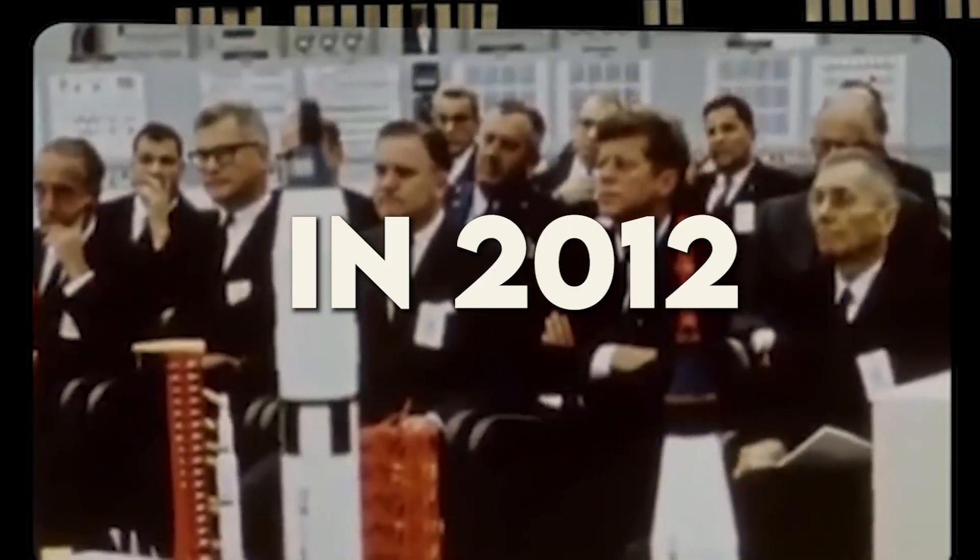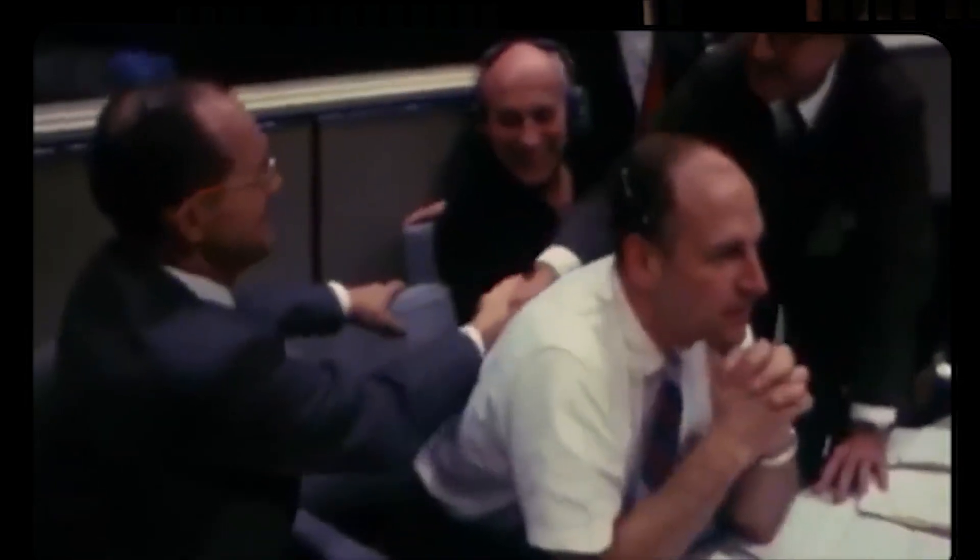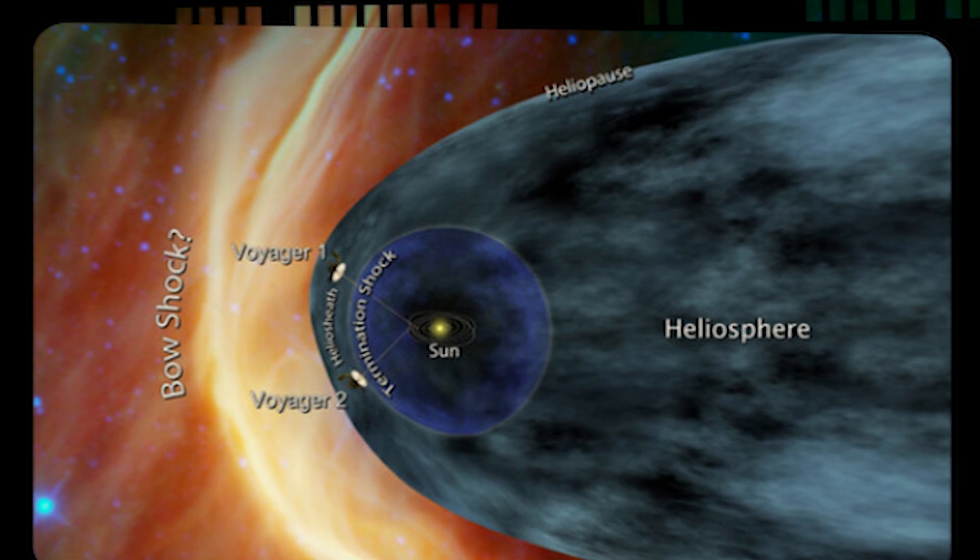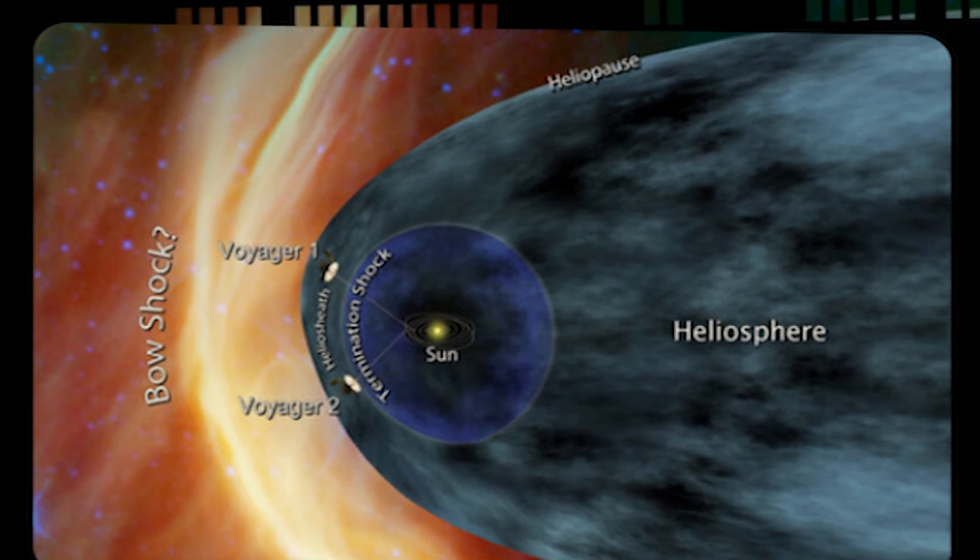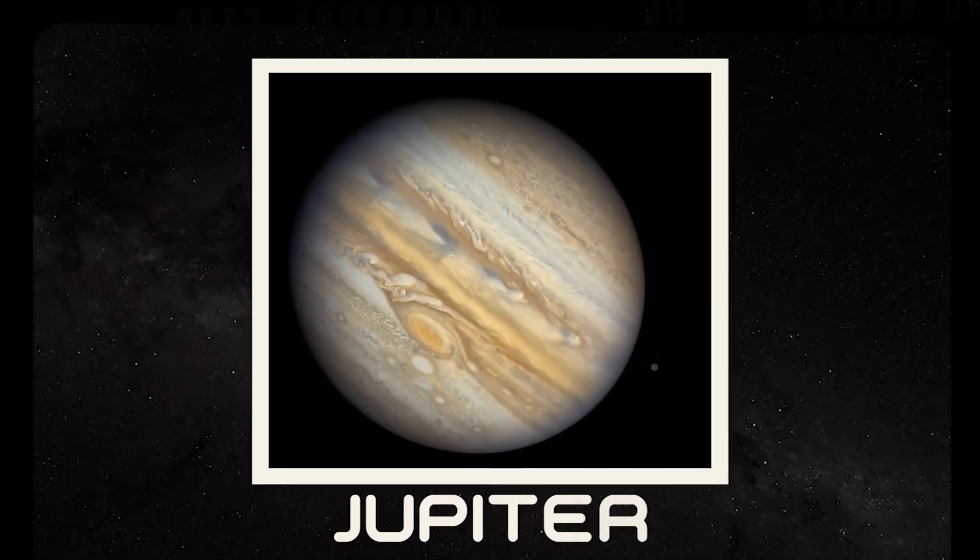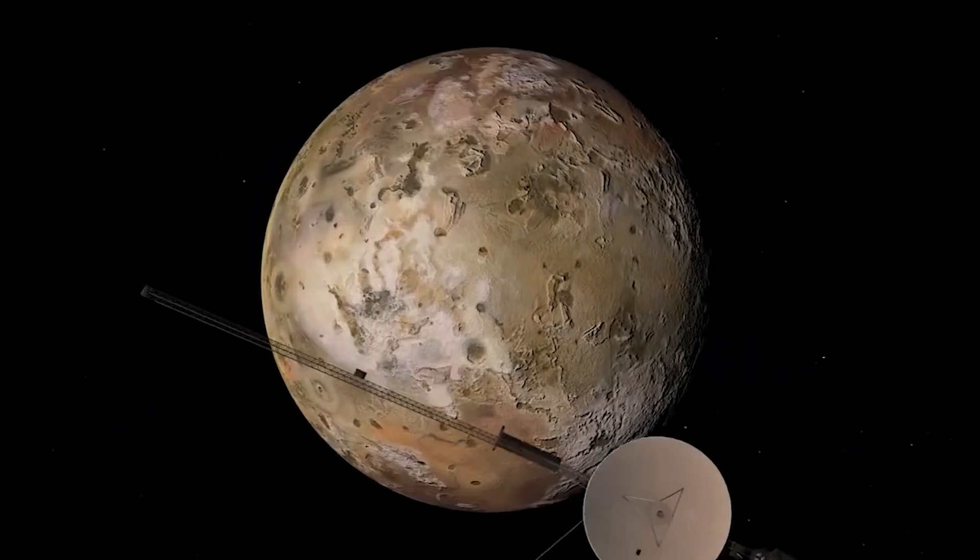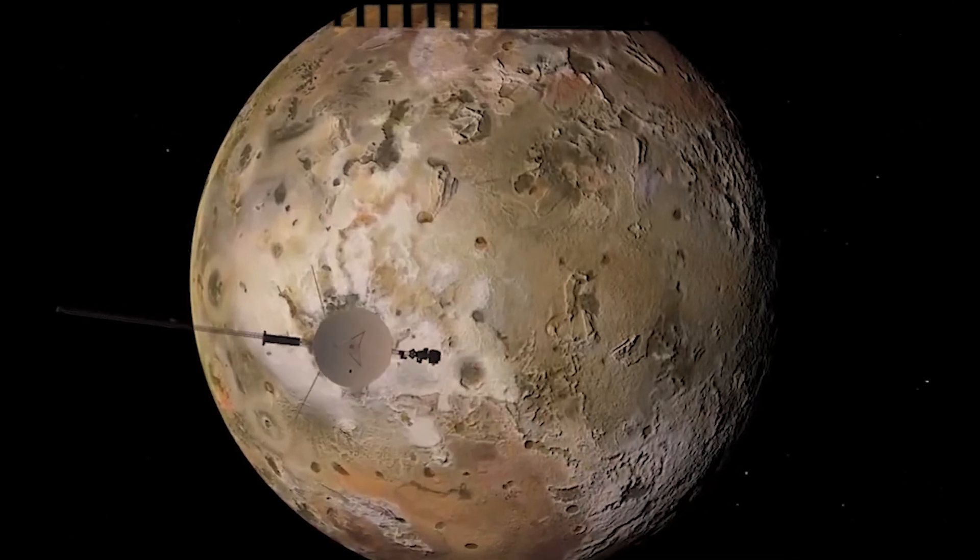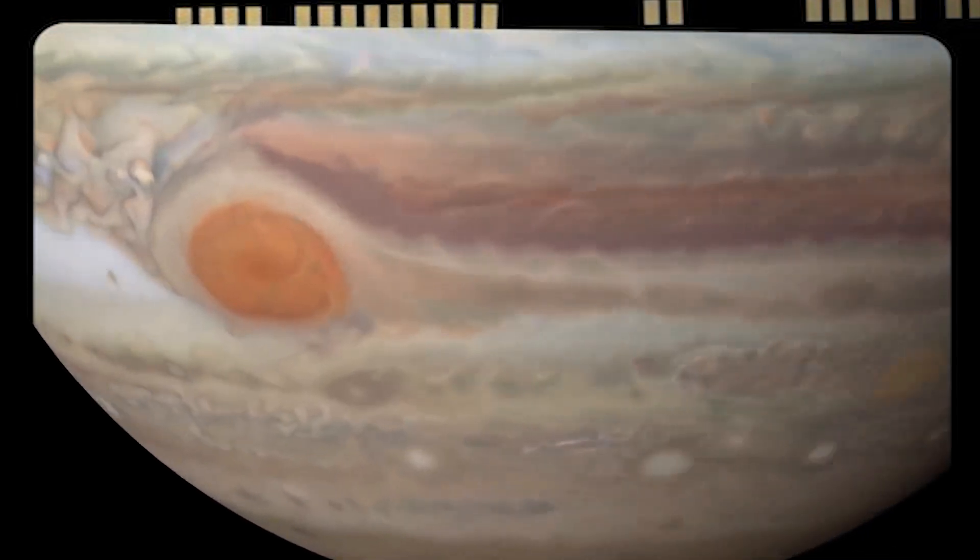In 2012, Voyager 1 achieved a historic milestone by becoming the first human-made object to breach the heliosphere, the protective bubble created by the Sun's magnetic field and solar wind. It ventured into interstellar space, carrying with it the iconic Golden Record, a time capsule of Earth's sounds, images, and greetings in multiple languages.